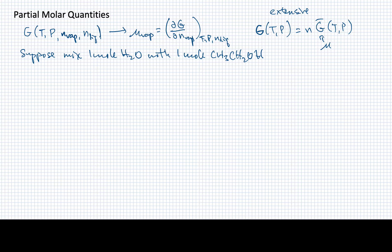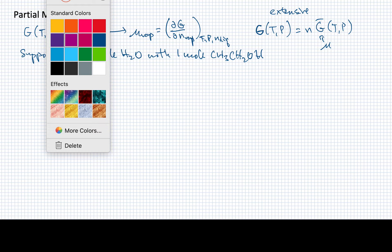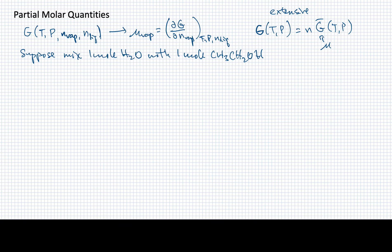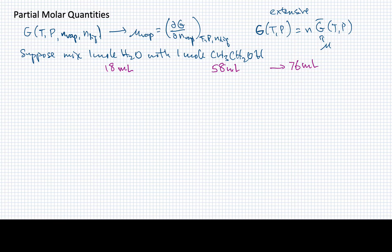If we mix those two together, one mole of water has a volume of 18 mL, and one mole of ethanol has a volume of 58 mL. So we would expect that mixing them together should give something like 76 mL — just the sum of those two. In the ideal case, that would be true. But when we actually do this, the total mixture we come up with is 74.2 mL. These are not equal — 74.2 mL is what we actually get.